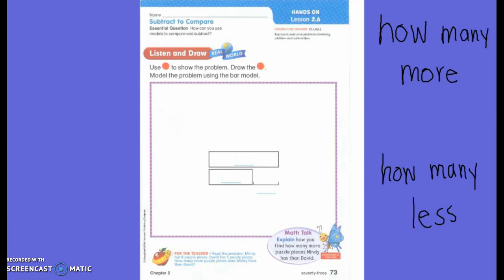Mindy has eight puzzle pieces. David has five puzzle pieces. How many more puzzle pieces does Mindy have than David? What key words do you hear? How many more. So I'm looking for two partners. Who doesn't have a partner?